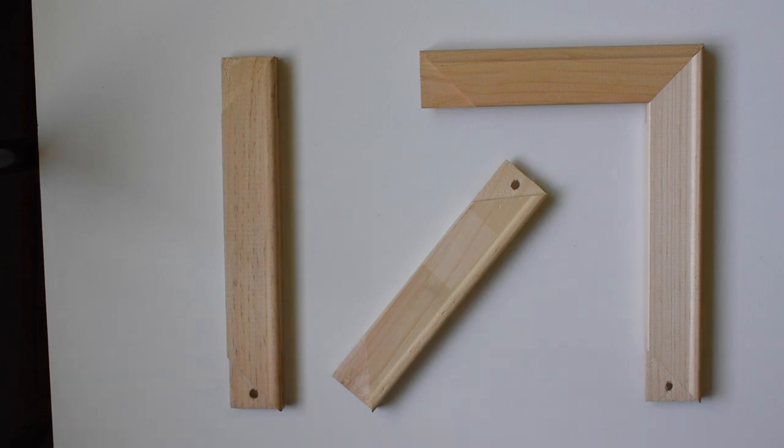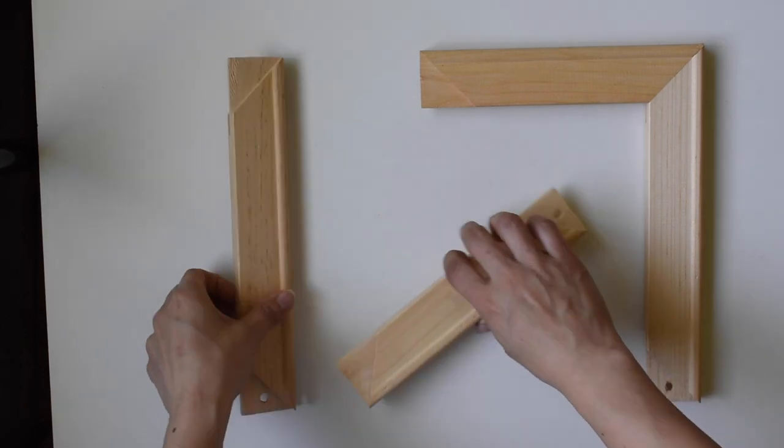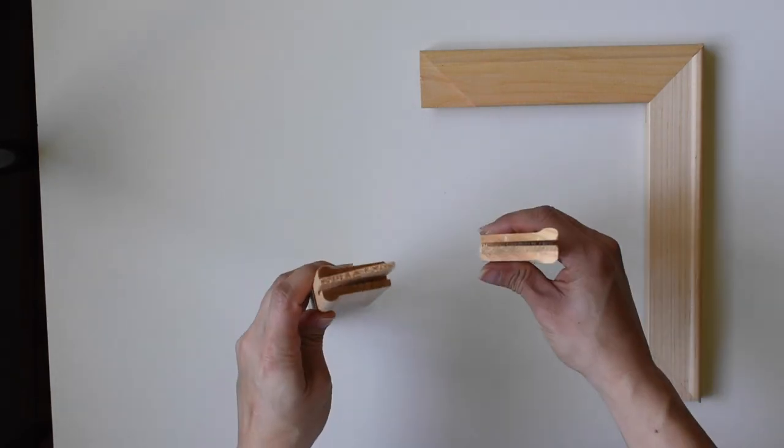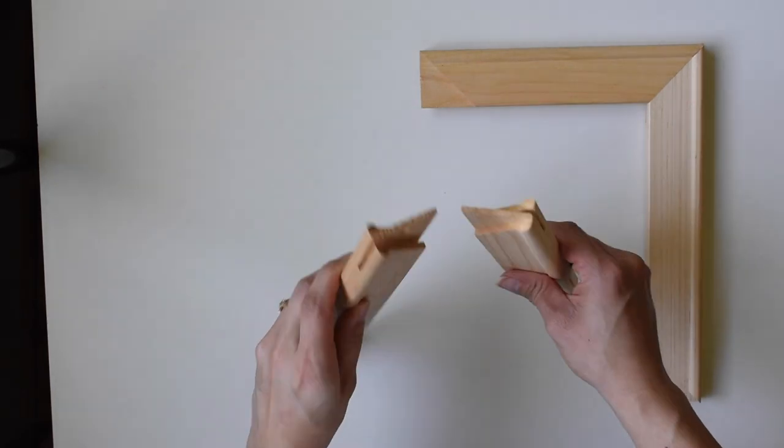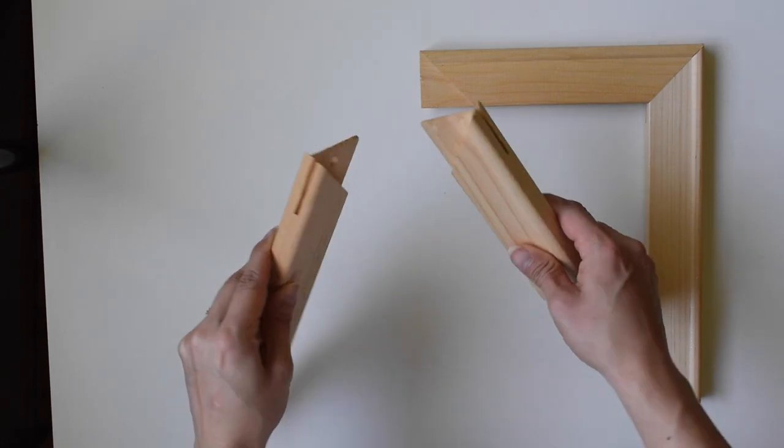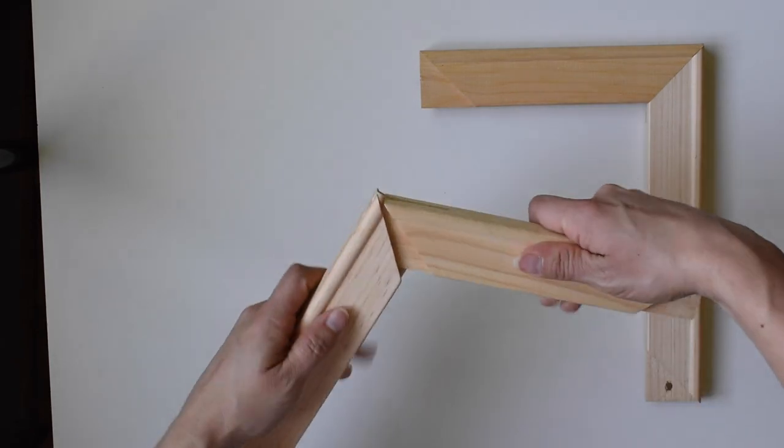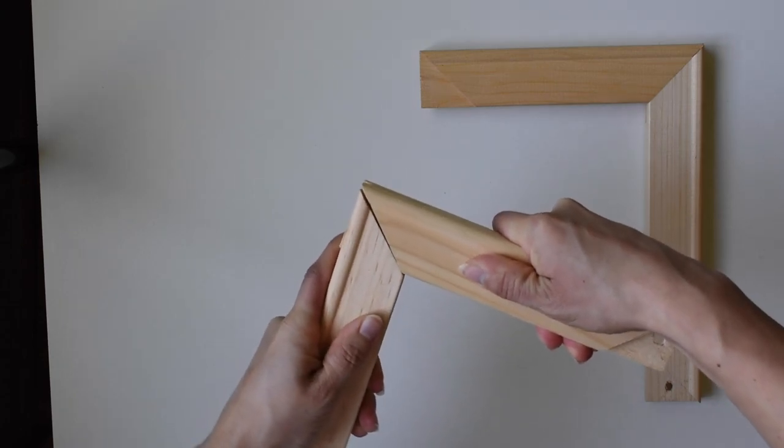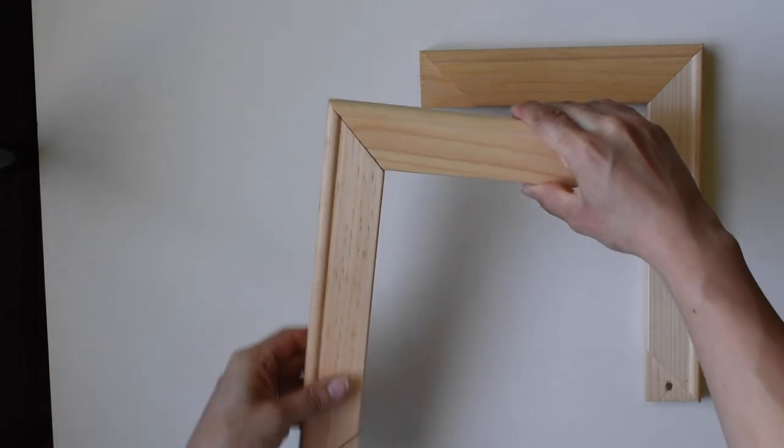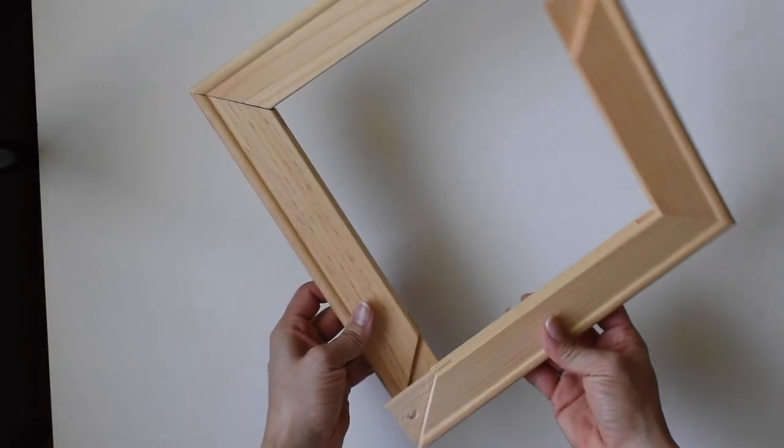So these are canvas stretcher bars that you can find at most craft stores or art supply stores. They come in a lot of different sizes, usually in two-inch increments. I think I have right here a 10 inch and 8 inch, or it might be a 10 inch and 6 inch. But they go all the way up to like 24 to 30 inches, so it's great that you can choose the exact dimensions of your art piece.